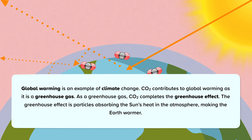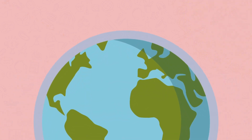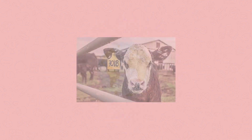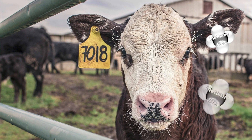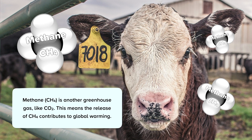In summary, global warming is an example of climate change. CO2 contributes to global warming as it is a greenhouse gas. The greenhouse effect is particles absorbing the sun's heat in the atmosphere, making the Earth warmer. It's not only carbon dioxide that is contributing to global warming. Methane, CH4, is another greenhouse gas, meaning it can absorb solar energy in the atmosphere. It is produced by some industrial processes such as drilling for oil, and is produced naturally by cows' digestion processes. Cows are farmed across the world for the meat and dairy industries, and the number of cows in the world makes an impact on global warming because of the amount of methane they produce.